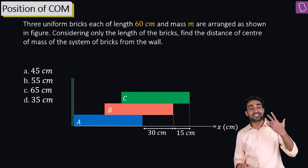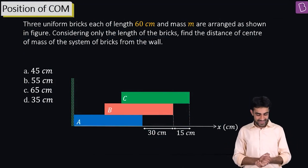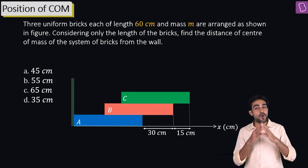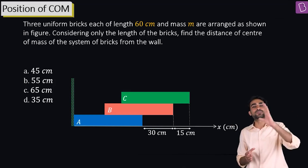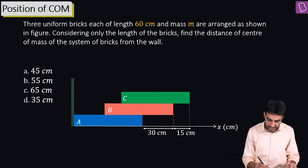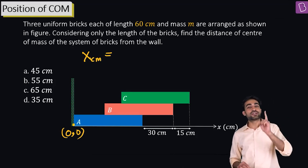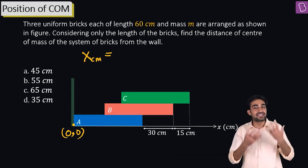3 uniform bricks, each of length 60 cm and mass m, are arranged as shown in the figure. Considering only the lengths of the bricks, find the distance of the center of mass of the system from the wall. How far away is the center of mass of this entire system from the wall? If we consider the origin at the wall itself, what is the value of x_cm?